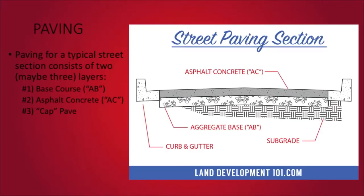The next component is paving. Paving for a typical street section consists of two or maybe three layers: the first being the base course, or AB for aggregate base; number two, the asphalt concrete or AC; and number three, a cap pave. On the right is a standard detail showing how that's laid out — you have the subgrade underneath, then the aggregate base, and then the asphalt concrete between the two curb and gutters on each side.